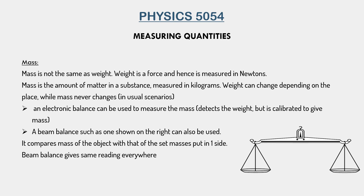Weight, on the other hand, changes with the placement of an object, because it is the gravitational pull acting on the object, and gravity is different in different scenarios. So if you go to the top of a hill, the weight of the object would be less than at the bottom of the hill. Or on a different planet, gravity changes and thus weight changes. By Einstein's theory of relativity, mass does also change, but the change is so minimal that in our normal O-level calculations we consider mass to be constant.